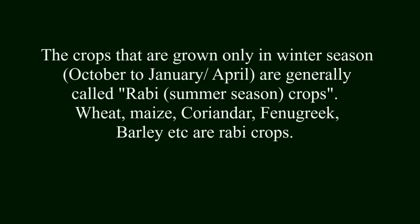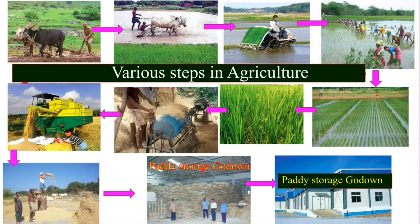Wheat, maize, coriander, fenugreek, barley, etc. are Rabi crops. These are the various steps in agriculture, starting from preparation of the soil up to the storage of the crop yield. Let us learn about the agricultural practices in detail.